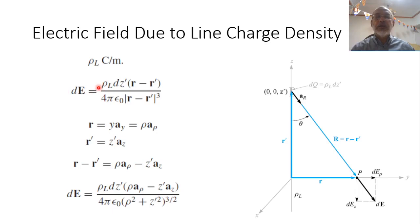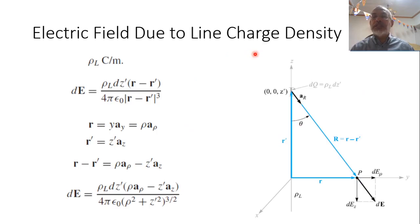To obtain the total electric field, we integrate this incremental field along the Z′ axis from minus infinity to infinity. The observation point r equals ρ in the ρ-direction in cylindrical coordinates. This problem is more naturally expressed in cylindrical coordinates because of the cylindrical symmetry around the infinite line charge — the line charge represents the axis of an infinite cylinder.